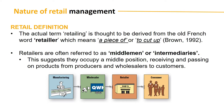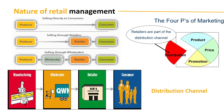Looking at the distribution channel, we have manufacturing, then wholesaling, and then retailing — the retailer basically sells product to final consumers. In the four P's of marketing, wholesaling and retailing fall under the distribution, or the 'place' component of marketing.